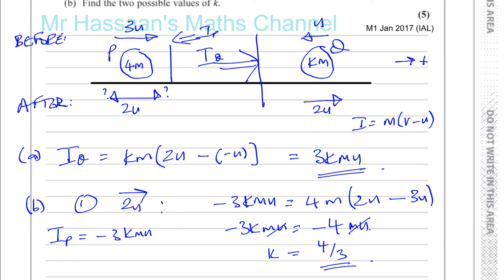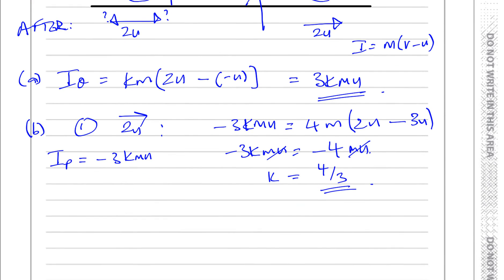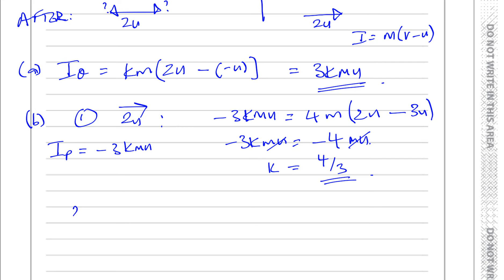We need to find another possible value of K. That's in the case, second case, where it's moving 2U with its direction reversed. This will make a bigger impulse, so a bigger value of K, which will cause this to happen. K must be a bigger value here for it to change direction.